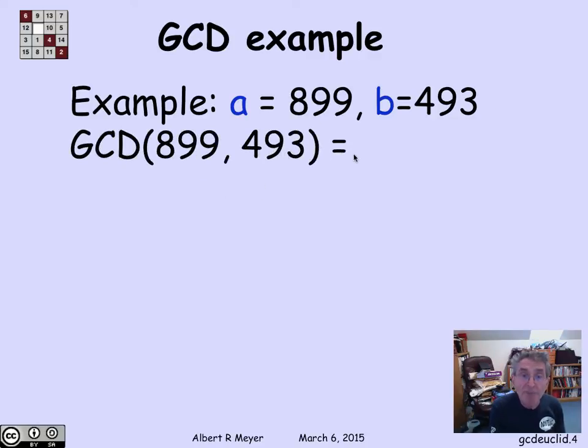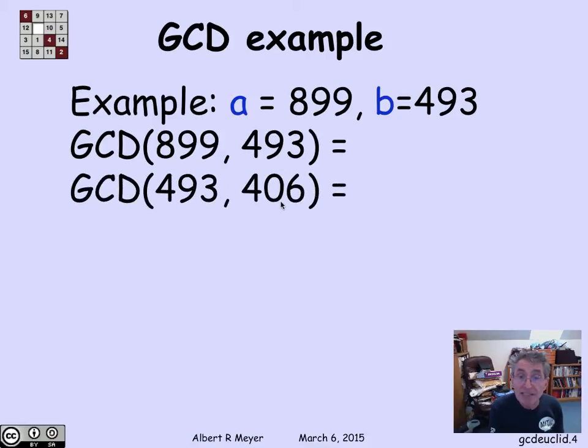According to the remainder lemma, if I divide 899 by 493, I get a quotient of 1 and a remainder of 406. So that means that 899 and 493 have the same GCD as 493 and 406. That is, as the original number b and the new remainder 406.